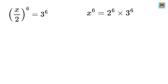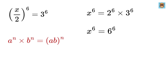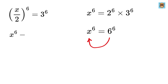Next, we will use another exponent rule. Applying this to our equation, we see that 2 to the 6 multiplied by 3 to the 6 is the same as 2 times 3, raised to the power 6, or 6 to the power 6. Now take this to the left-hand side to get x raised to the power 6 minus 6 raised to the power 6 equals 0.